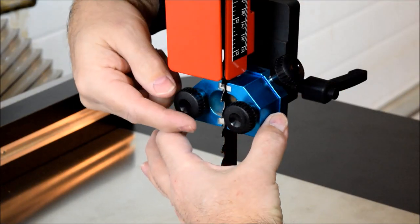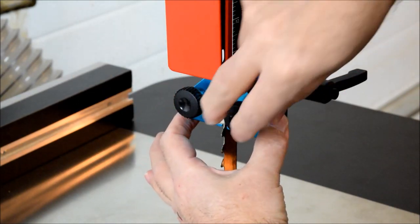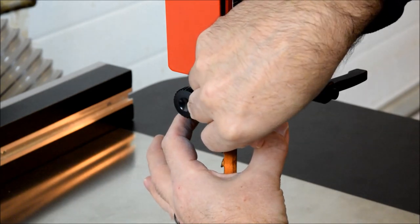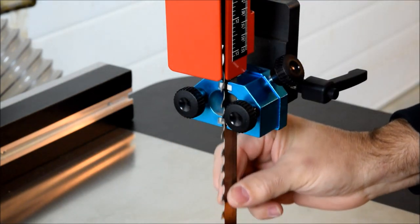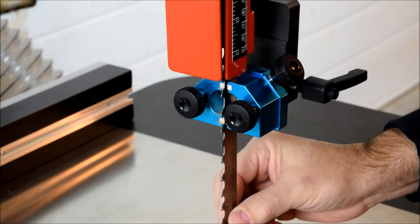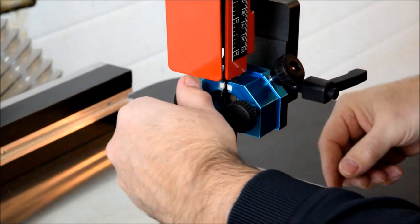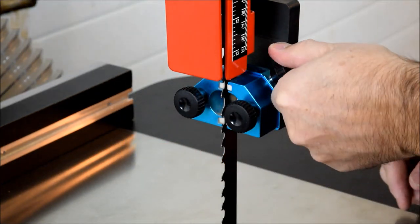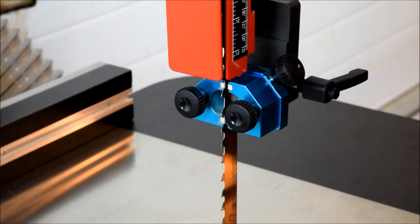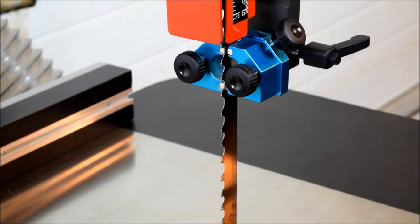And then you can just do one by one, gently start tightening these knobs. And if you feel like you've got good support without pinching the blade, then you go ahead and lock those knobs home. And I think at this point we're ready to do some resawing.